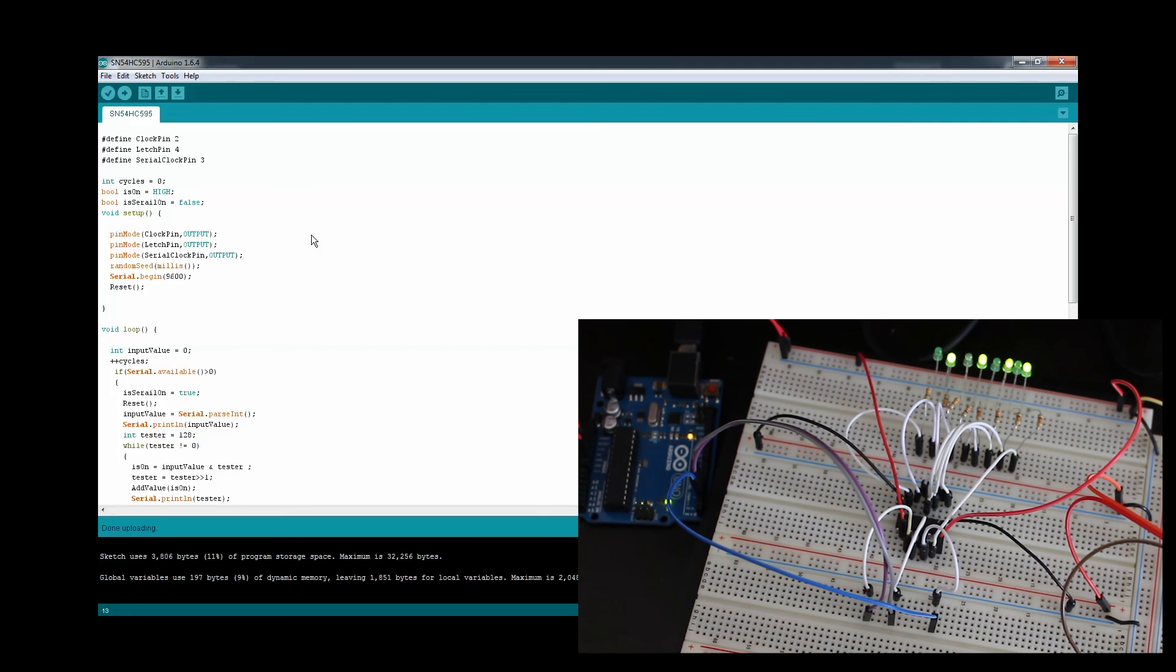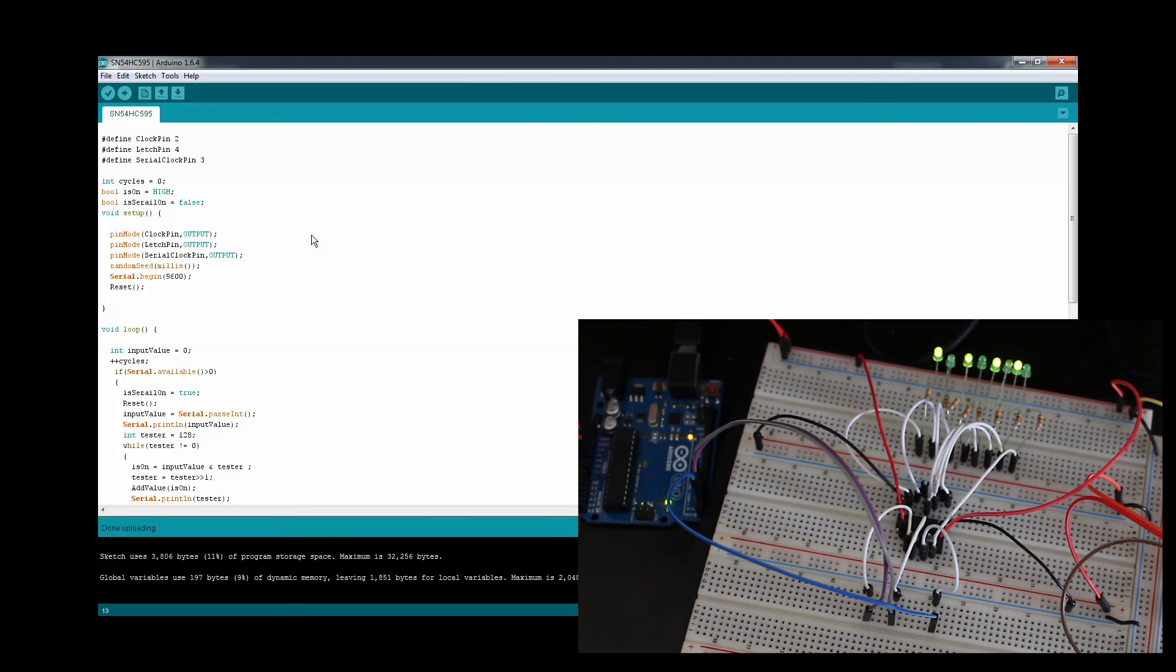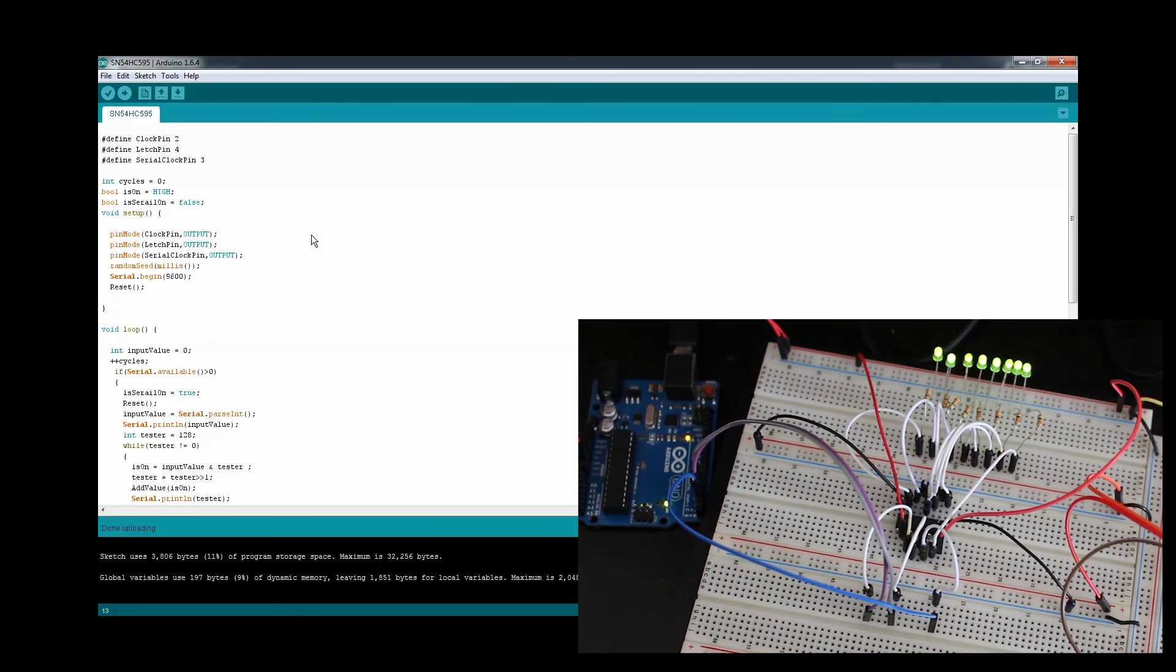What you see right now is basically that alternation between the lights, always going one on one off one on one off, and it's pushing it. Let me restart the Arduino that way you can see it better. You can see now it's going on off on off.